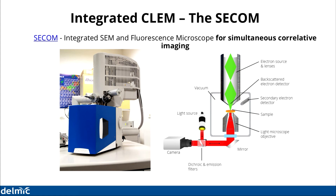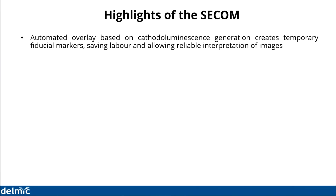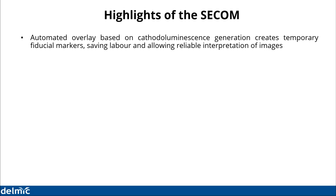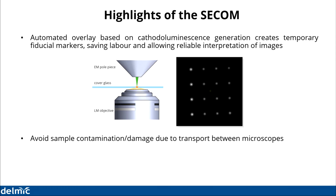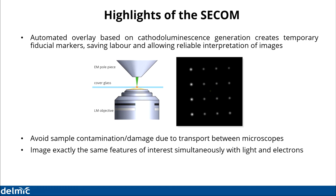Why is integrated CLEM performed this way? The main highlights of the SECOM are that it's possible to have an automated overlay between the electron image and the optical image. One of the main challenges in conventional CLEM is that performing a manual overlay between the two images is very laborious, time-consuming, and prone to error. In the SECOM, the automated overlay is performed based on cathodoluminescence generated when the electron beam strikes the sample, creating temporary fiducial markers used to perform the overlay in an automated manner. Having one system do both imaging schemes avoids sample damage or contamination, because it avoids transportation between microscopes altogether. You can be sure you're imaging exactly the same features or region of interest in both systems, because it's done simultaneously.